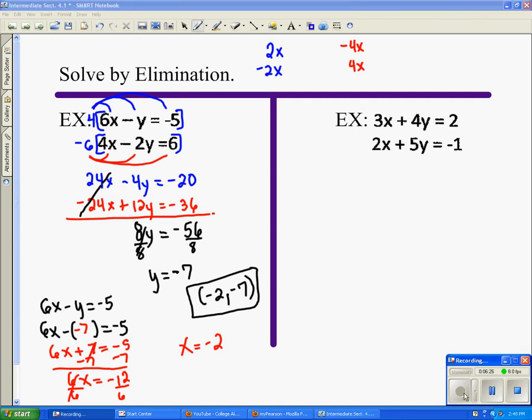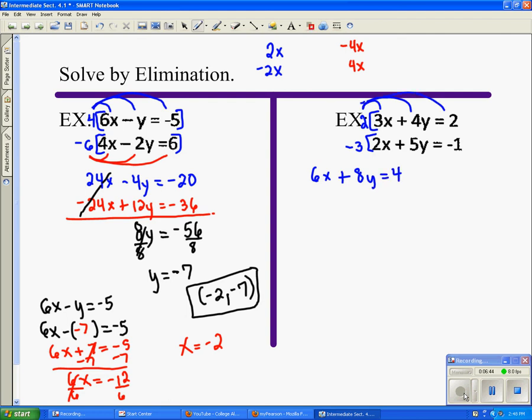The next equation, if I'm trying to make my x values eliminate, I'm going to multiply the top one by 2 and the bottom one by 3. I need one to be positive and one to be negative. So now we distribute. 6x plus 8y equals 4, and on the bottom we get negative 6x minus 15y equals 3.